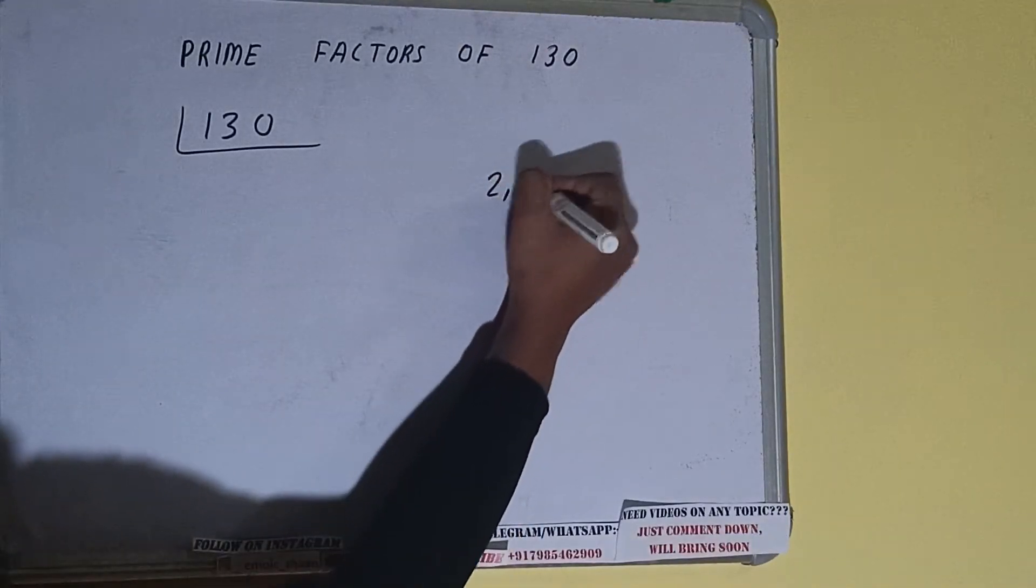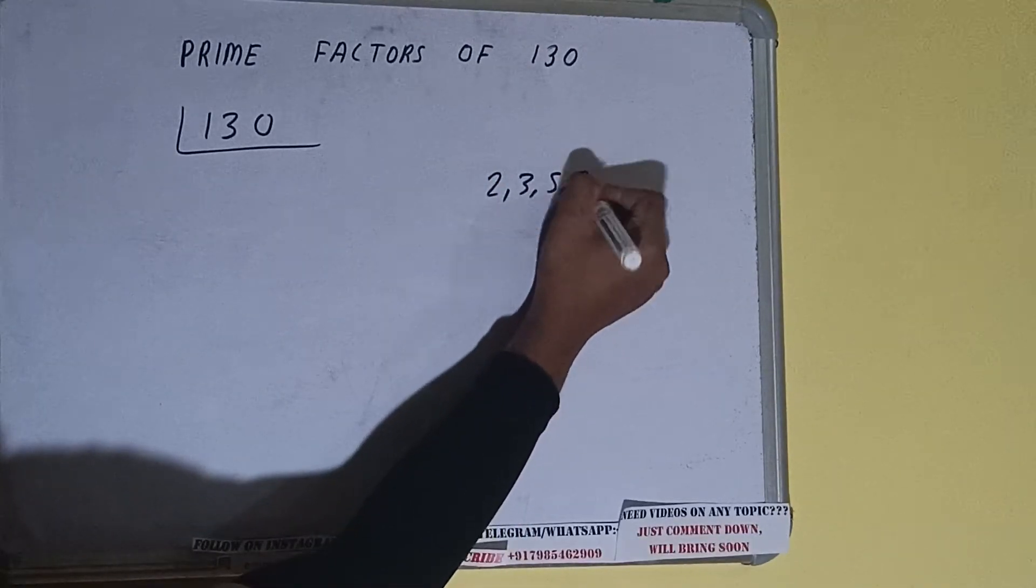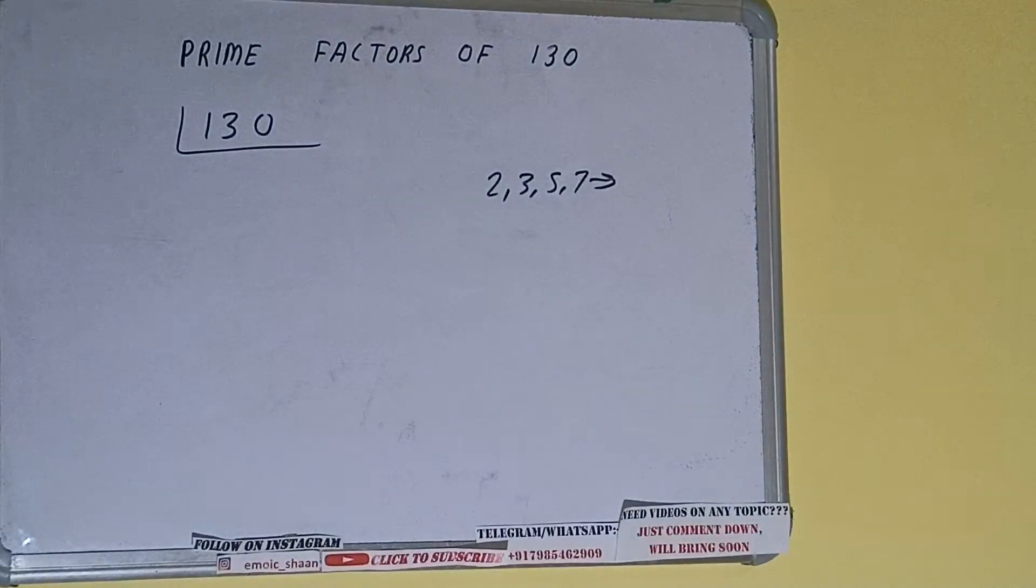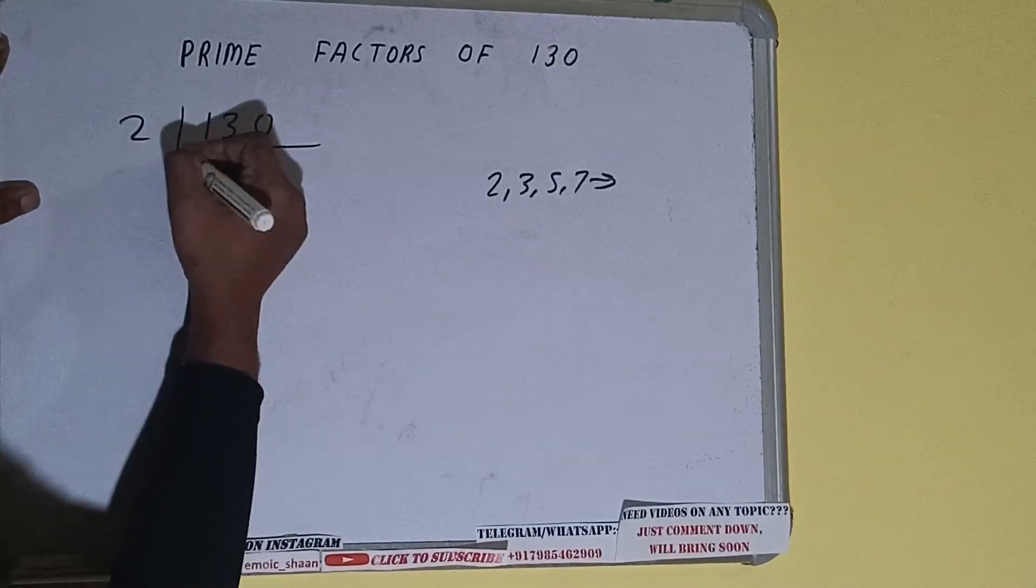Like 2, 3, 5, 7, and so on. All right, so we'll check with the lowest prime number we have, that is 2. Is the number 130 divisible by 2? Yes, it is, because the number is even and we'll be having 65.